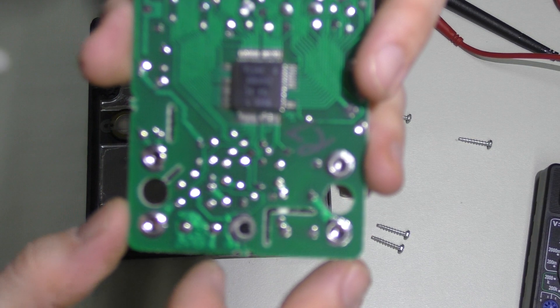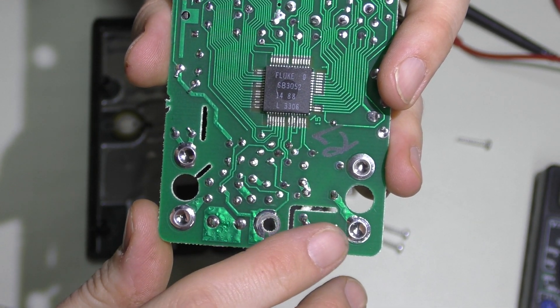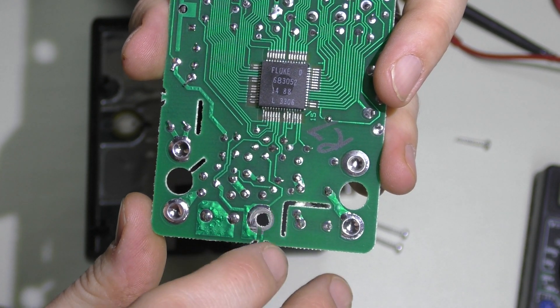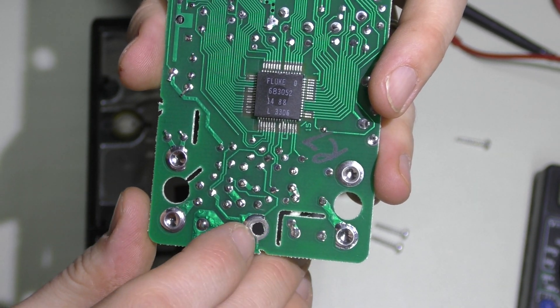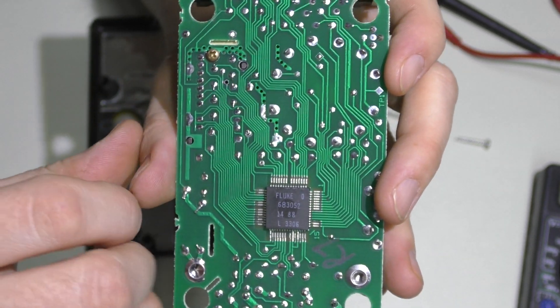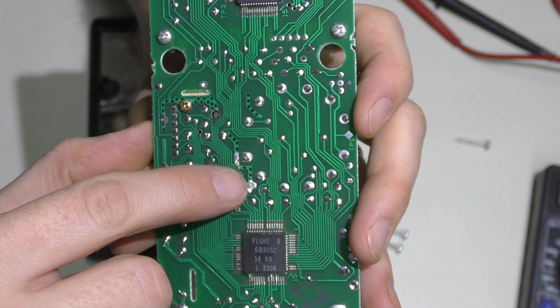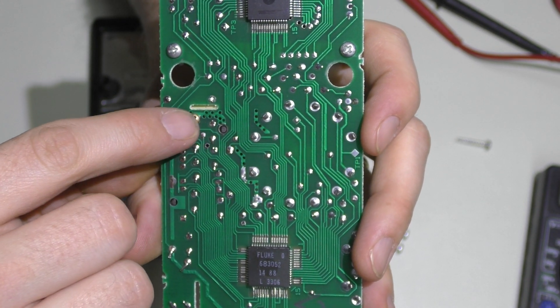If I get closer here, you can see they actually routed out slots in the PCB here to keep some isolation in there, which is nice. That's something that I noticed that wasn't on the other meters. Also, here there's some vias—not sure what the purpose of that is, but the engineering on this PCB is a lot better.